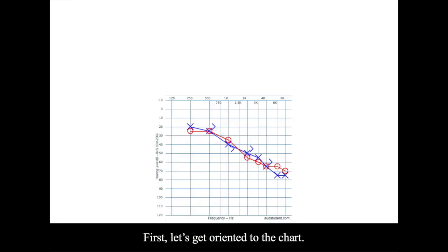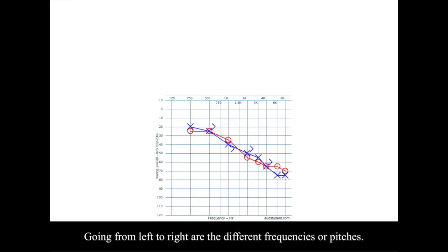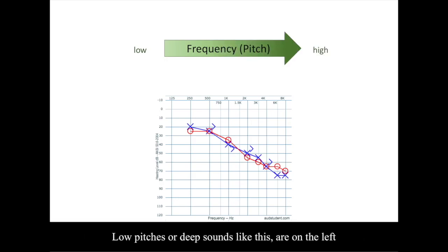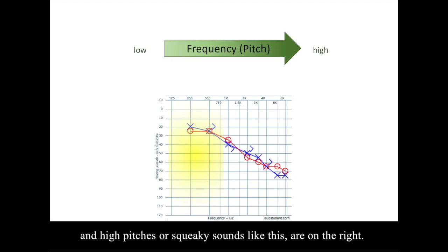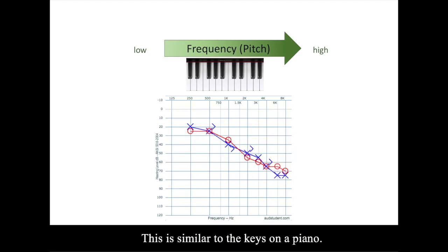First, let's get oriented to the chart. Going from left to right are the different frequencies, or pitches. Low pitches, or deep sounds like this, are on the left. And high pitches, or squeaky sounds like this, are on the right. This is similar to the keys on a piano.